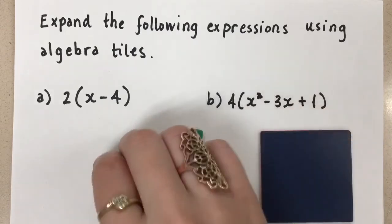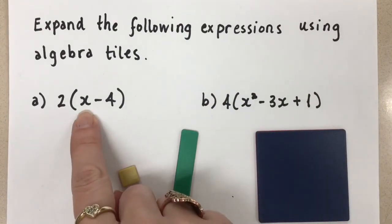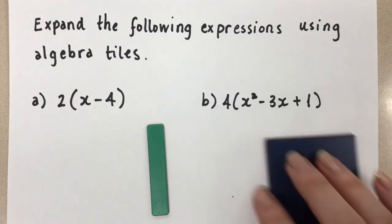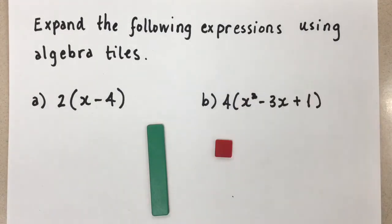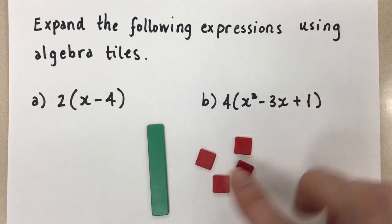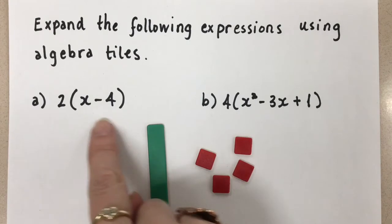So for this first question that we're doing, the x minus 4, we need 1x, and it's positive, so that one. And then we need minus 4, so we're going to use 4 negative 1s. So this here shows x minus 4, the expression in the brackets.